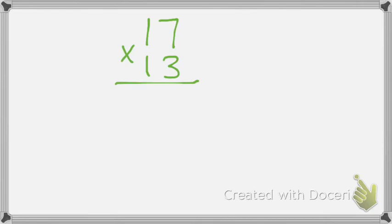17 times 13. I'm going to start with everything times my 3. So I've got my 3, and it is in the 1's place, so this one is just a 3. The 7 is in the 1's place, so I write down that.